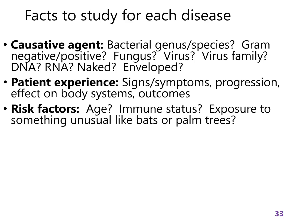Another big thing is going to be risk factors — so who gets that disease, and what predicts whether someone's going to get it or not? For example, I've been reading about really terrifying viruses that are spread by bat urine that collects on palm trees. That's an example of something you would need to know if you were reading about that particular virus, but we won't cover that one because it doesn't occur in North America yet.